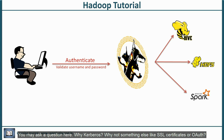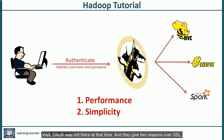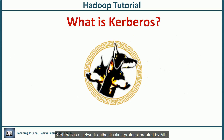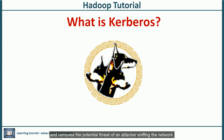You may ask: why Kerberos? Why not something else like SSL certificates or OAuth? Well, OAuth was not available at that time, and they give two reasons over SSL: performance and simplicity. Kerberos performs better than SSL, and managing users in Kerberos is much simpler. To remove a user, we just delete it from Kerberos, whereas revoking an SSL certificate is a complicated thing. Kerberos is a network authentication protocol created by MIT. It eliminates the need for transmission of passwords across the network and removes the potential threat of an attacker sniffing the network.